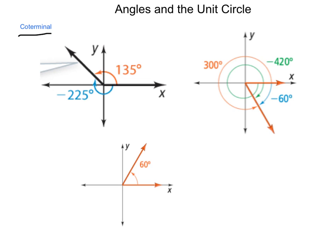In the diagram on the right, we have several coterminal angles. We can follow this red angle measurement all the way around, counterclockwise, and end up with 300 degrees.